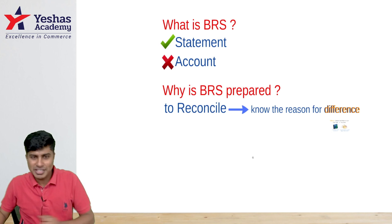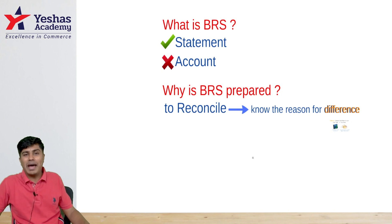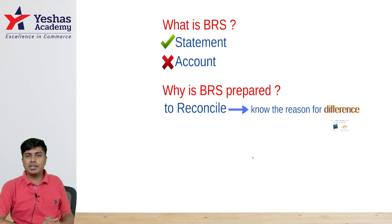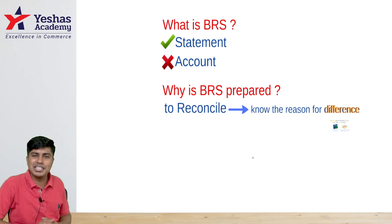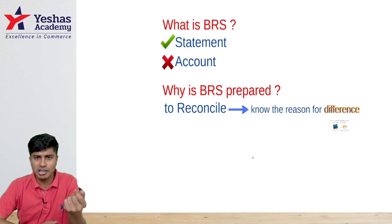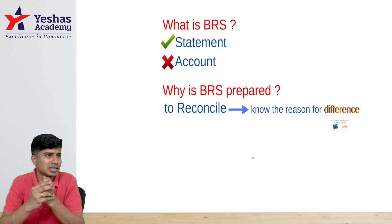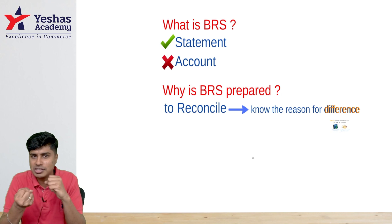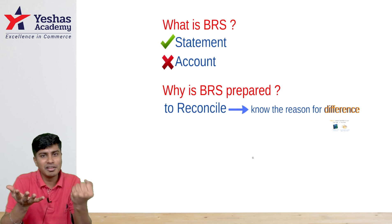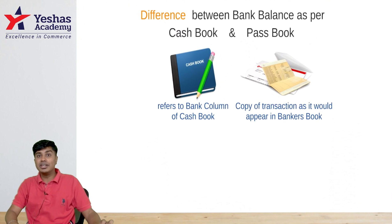We've all done this chapter, we all love this chapter — bank reconciliation statement, one of our favorites. In this chapter, they either provide us with a balance as per cash book or balance as per passbook, along with a set of differences. We either add or deduct them to find the other balance — sometimes cashbook balance with differences to find passbook balance, or passbook balance and differences to find cashbook balance.